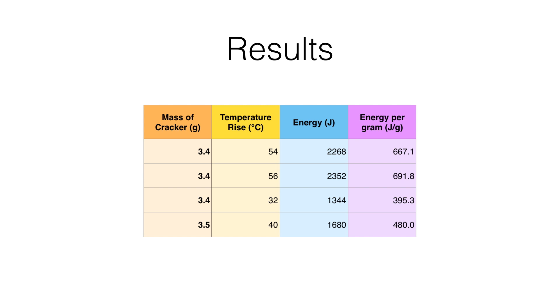If I had a biscuit that's, say, 7 grams, I could take one of those energy per gram calculations in purple and multiply by 7. That should give me an estimation, a prediction.